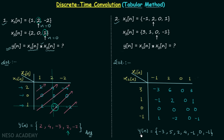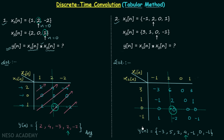Now we find the value of yn when n equals 0. We locate x1n at n=0, which is 2, and x2n at n=0, which is 0. The intersection point gives an element from the table, and after diagonal addition — 1 plus 0 plus 0 plus 3 — we get 4. Therefore, 4 is the value of signal yn when n equals 0. This is our final answer.